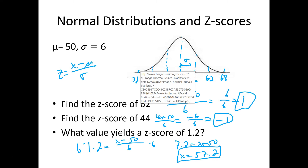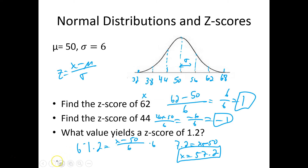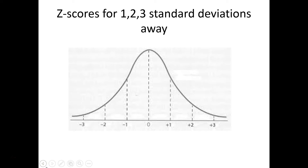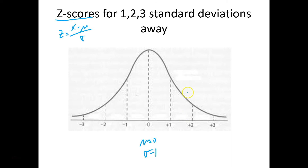Solving for z-scores is pretty much what your first homework page is, and it's really quick. The z-score formula is x minus the average divided by the standard deviation, and it tells you how many standard deviations away you are. If we're 2 standard deviations away, the z-score should be 2. For example, using an average of 0 and standard deviation of 1: 2 minus 0 over 1 equals 2. That's all there is to it.